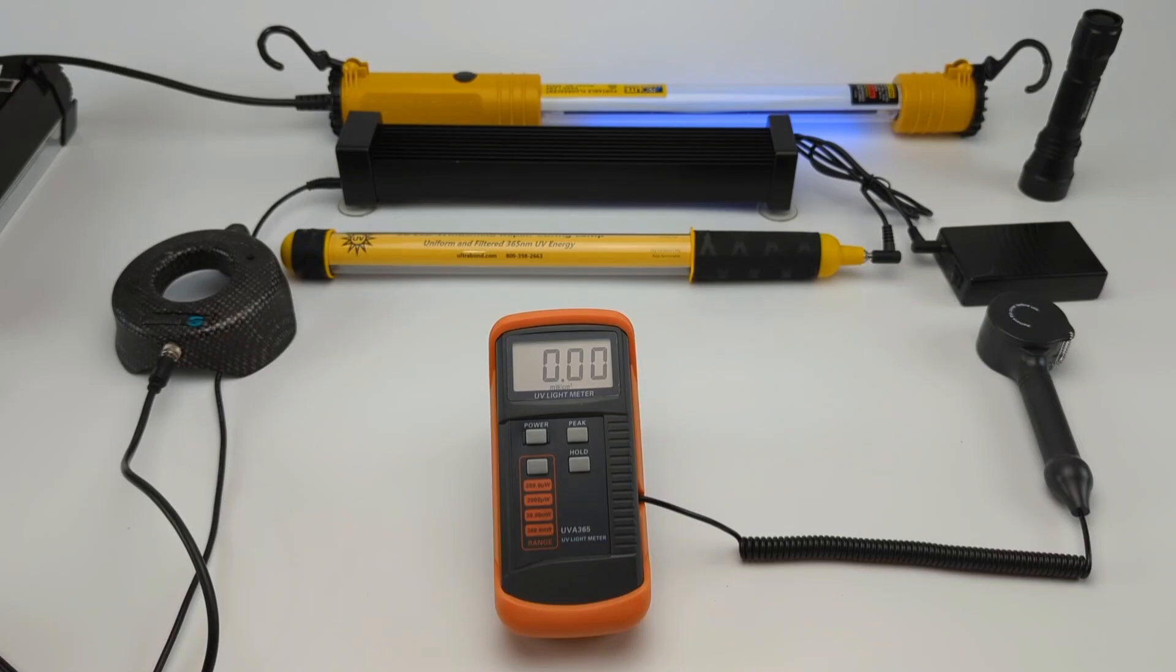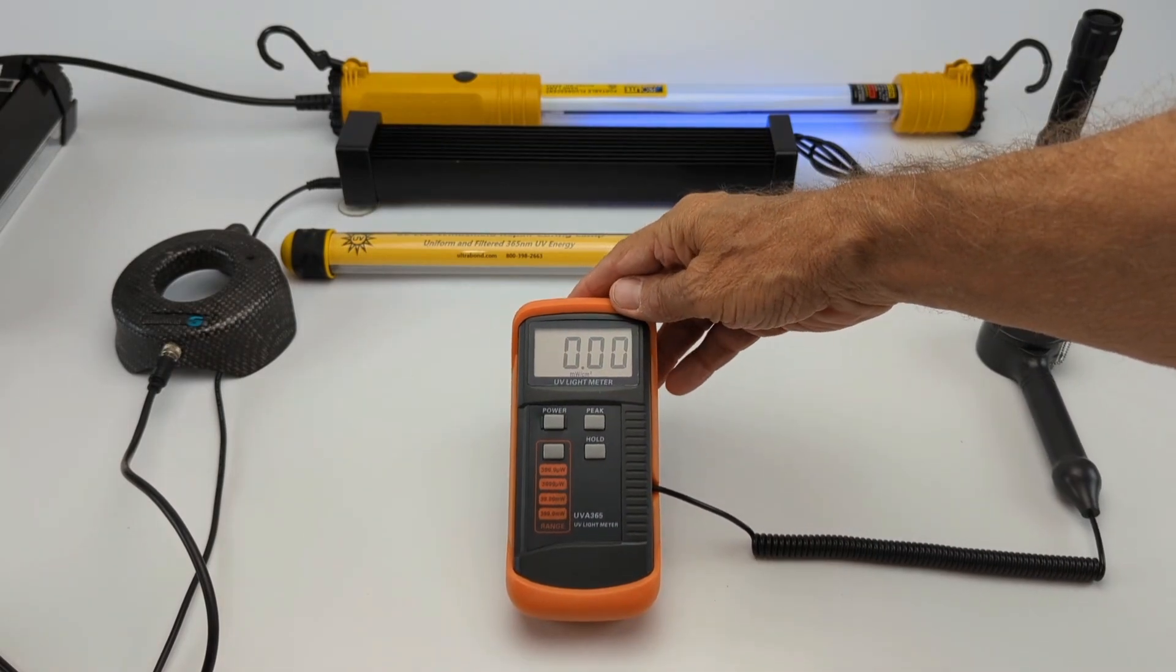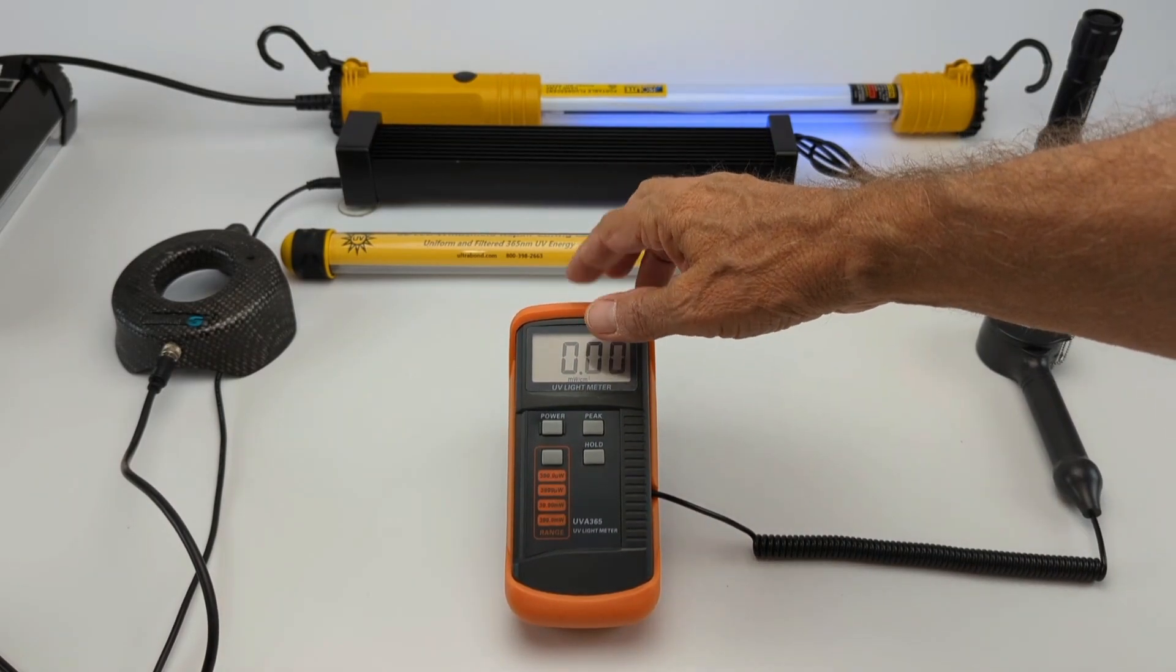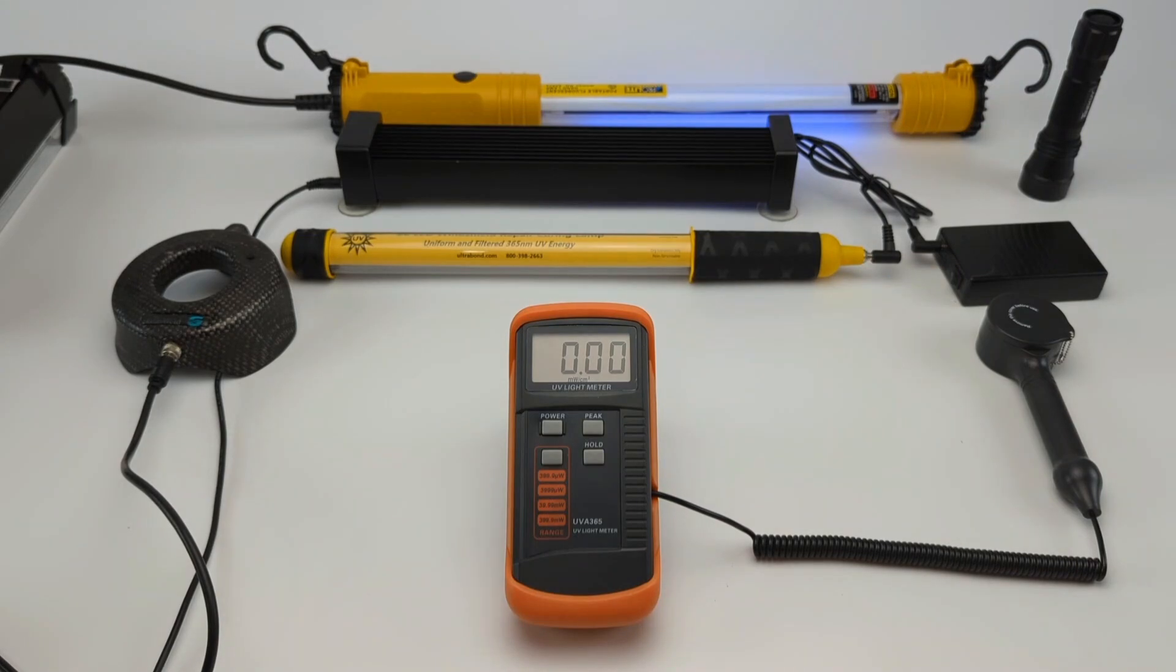We're disclosing what the others don't disclose, and that is the intensity and uniformness of those curing lights. Apparently, some of them do not have a UV light meter. Now, this is a UV light meter, and I would recommend anybody in the windshield repair business buy one of these. They only cost about $150, but they will give you a read on the UV energy available.